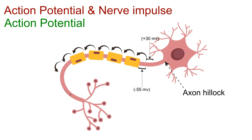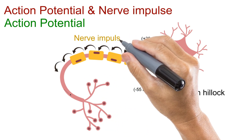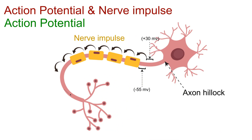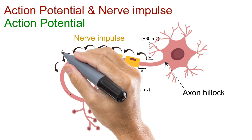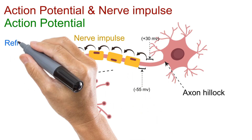This traveling wave of action potentials is what we call a nerve impulse. Notice that the impulse always moves in one direction, from the axon hillock to the axon terminals, because the region behind it is temporarily inactive, a period known as the refractory period.